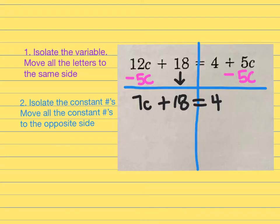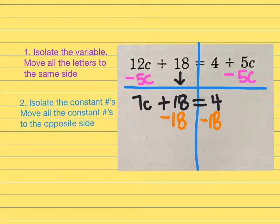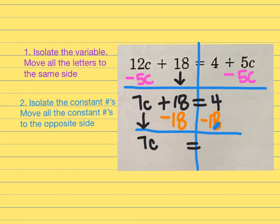The next step is to isolate the constant numbers. I have positive 18 on the left and 4 on the right — I need them together and away from the variable. So I subtract 18 from both sides. That eliminates the 18 on the left. On the right, 4 minus 18 means I'm taking away a bigger number, so the answer is negative — negative 14.